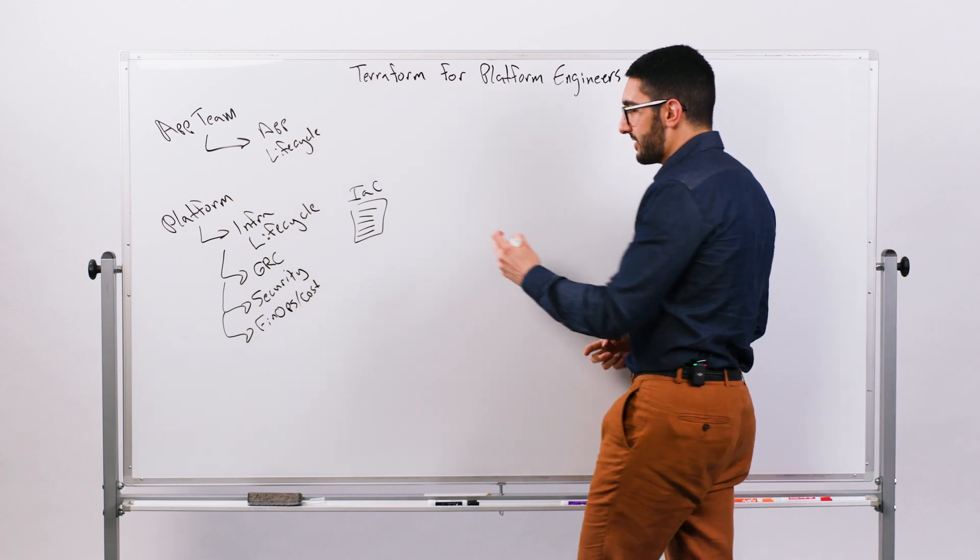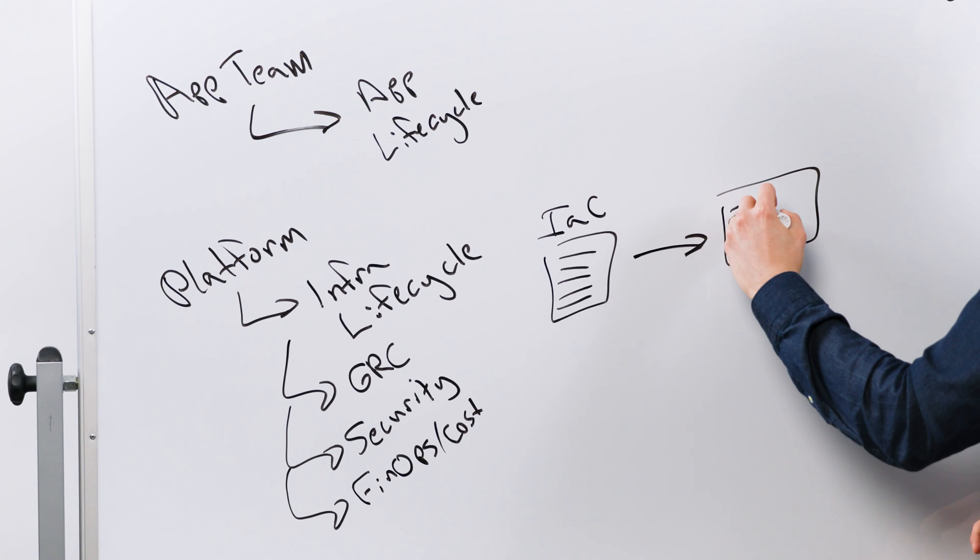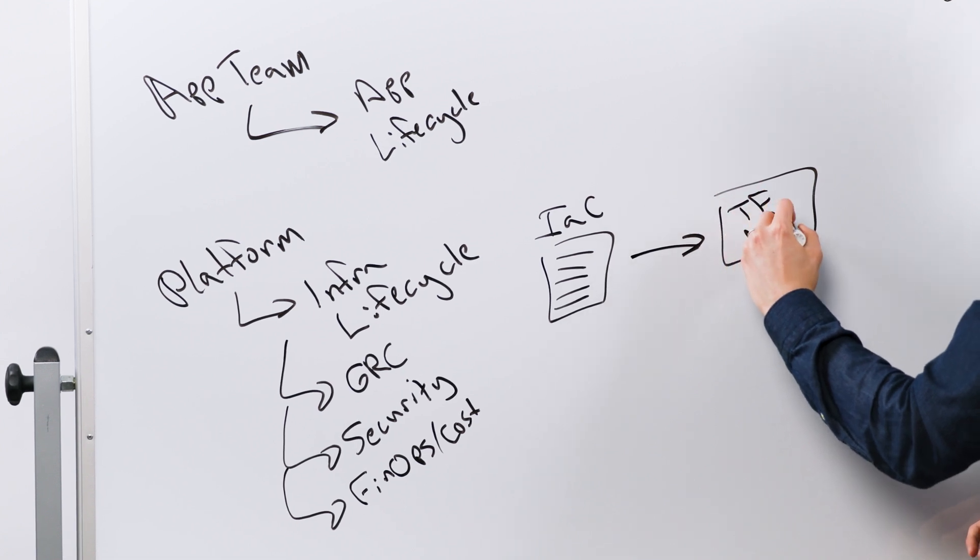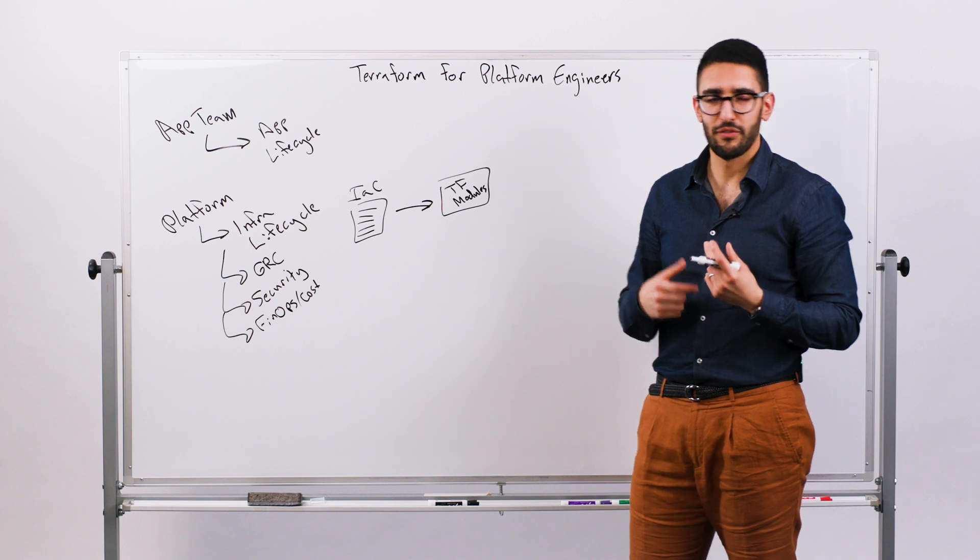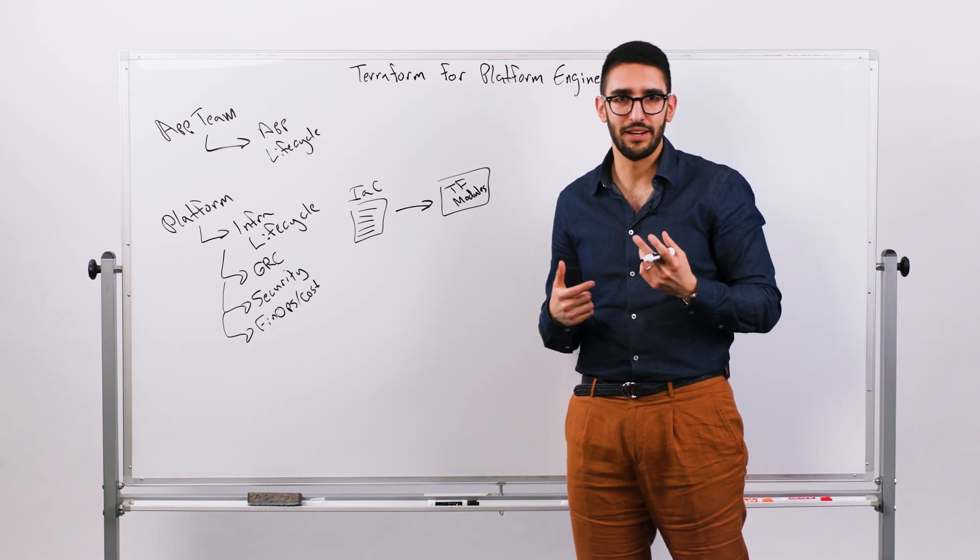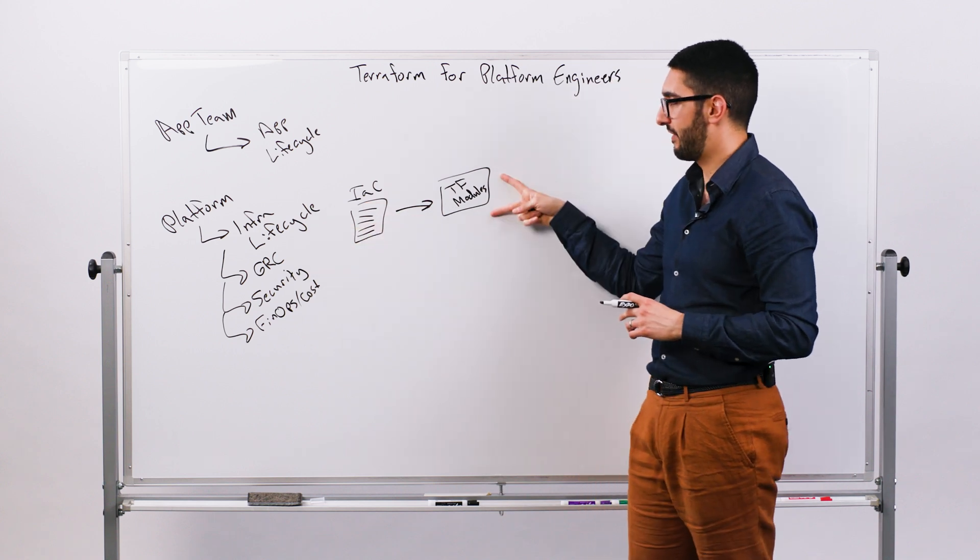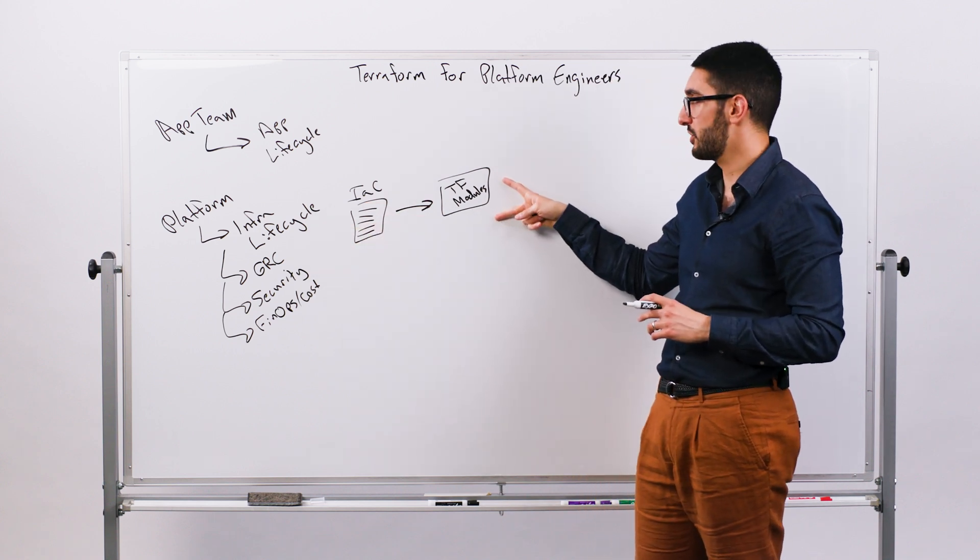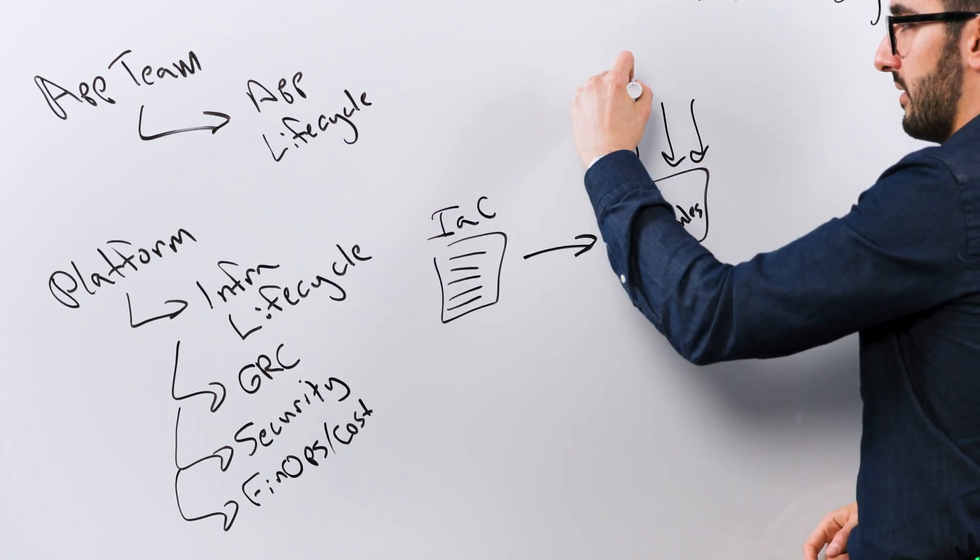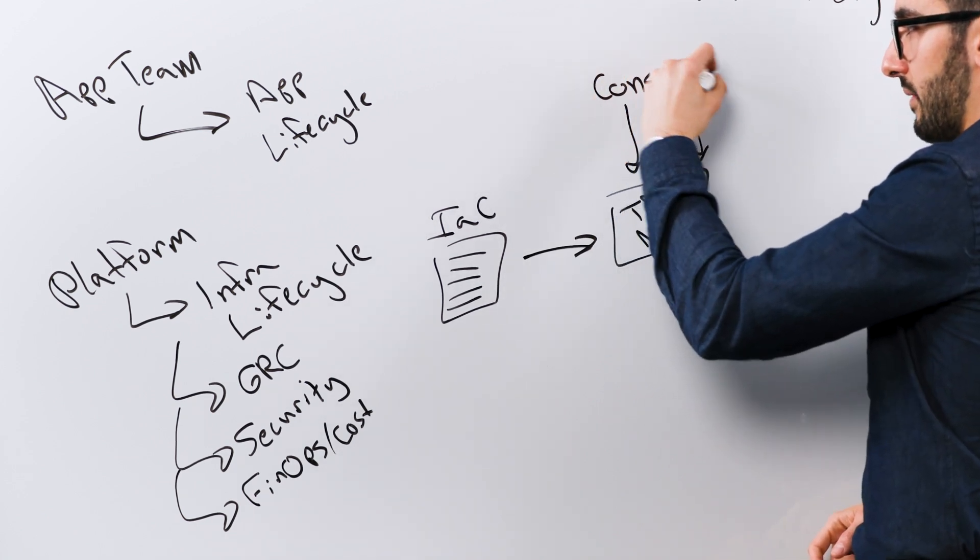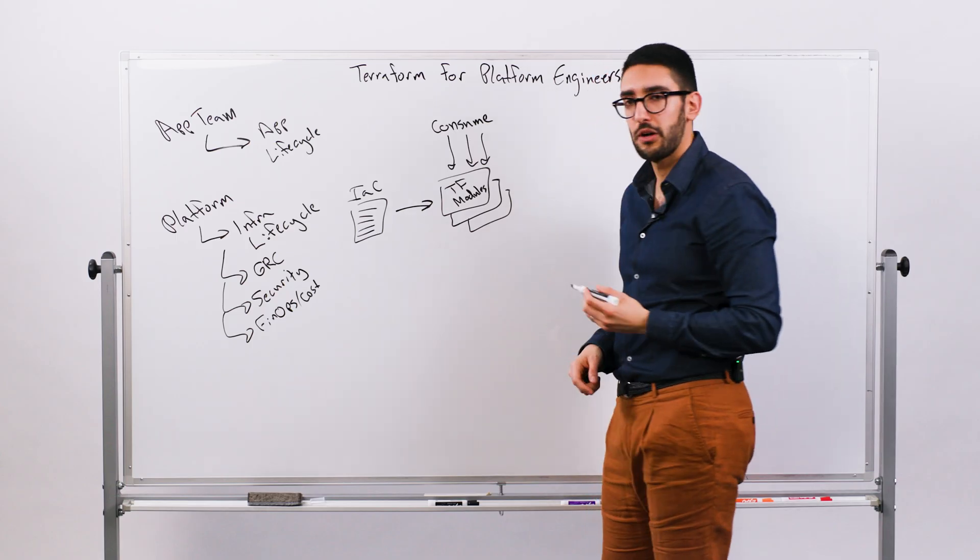So I think where most of this starts is driving a level of standardization around things like Terraform modules. So I don't want my application teams to have to redefine how do I provision a database? How do I provision my Kubernetes cluster? How do I deploy a generic Java application? As a platform organization, I want to define those things as a shared set of modules so that my developers can come in and simply consume those.